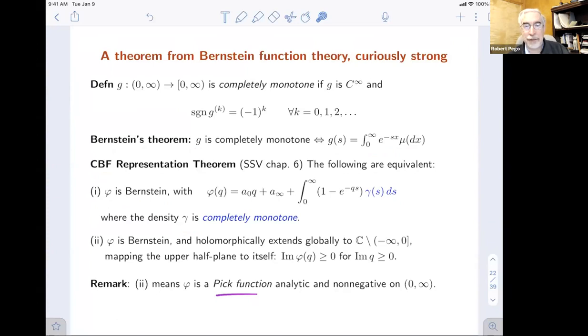In the book you find this complete Bernstein function representation theorem. That's an extension, if you like, of Bernstein's theorem that says a completely monotone function is exactly a Laplace transform of something. A Bernstein function, a primitive of a Laplace transform, has a characterization of when that density is extremely nice. When is the Levy measure related to a completely monotone function? That's true if and only if the Bernstein function here, which is analytic in the right half plane, extends holomorphically to the entire plane cut along the negative real axis, which leaves the upper half plane invariant. That's what a Pick function is.